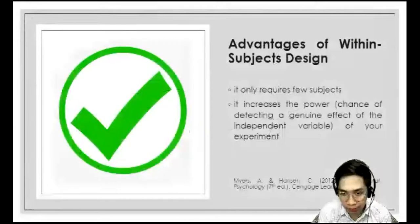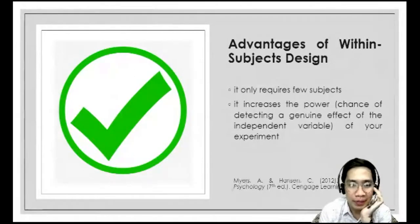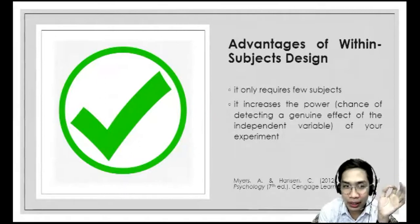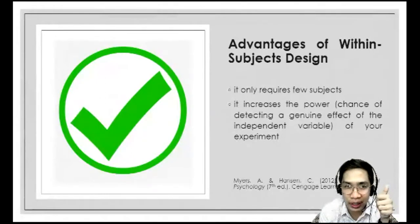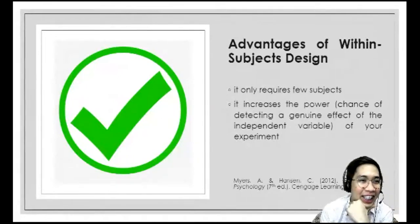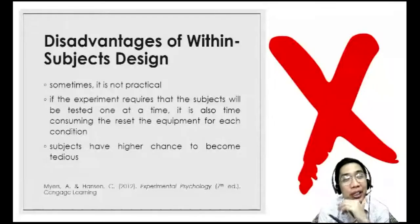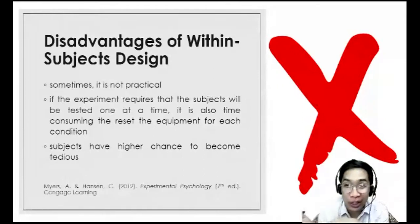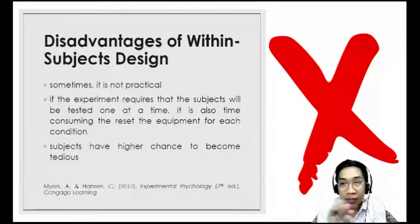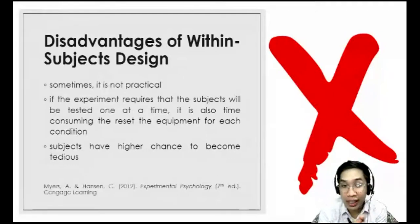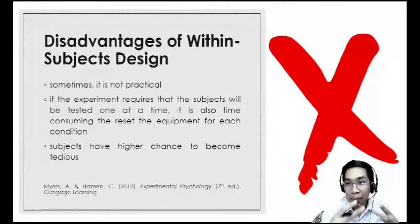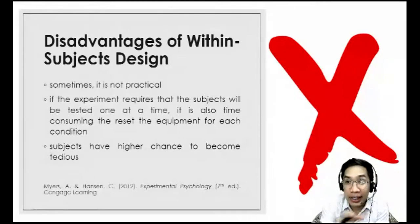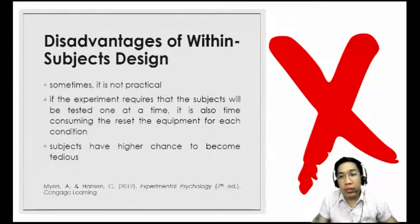Now for the disadvantages of within-subjects design. First, it's sometimes not practical because subjects are used repeatedly across all conditions, requiring more time from them. If there are many treatment conditions run across different sessions, subjects may have other commitments they cannot attend. This can lead to mortality threat — subjects drop out between sessions, reducing your data. As sessions accumulate, more subjects may become unavailable.